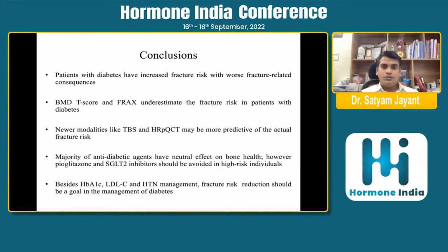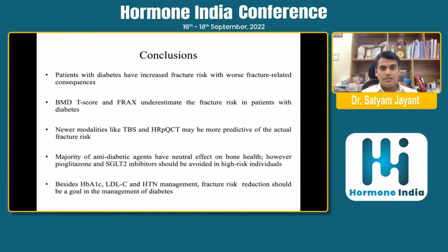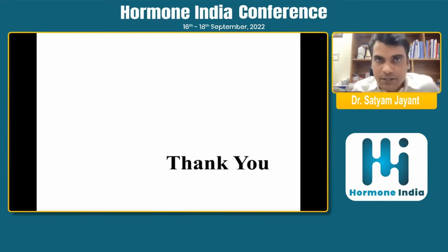Fracture risk assessment should be an important goal in management of diabetes with osteopenia or osteoporosis. In conclusion: patients with diabetes have increased risk and worse fracture-related outcomes. BMD T-score and FRAX underestimate fracture risk. Newer modalities like TBS and HR-pQCT may more accurately predict fracture risk. Most anti-diabetic agents have neutral effects on bone health; however, glitazones and SGLT2 inhibitors should be avoided in high-risk individuals. Alongside HbA1c, LDL-C, hypertension, and lipids, fracture risk reduction should be a goal in diabetes management.